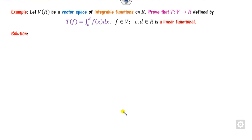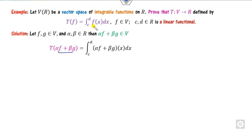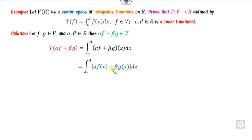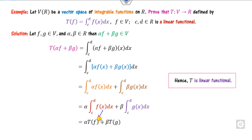Looking at another example: can this be a linear functional? Taking the vector space of functions, consider two functions F and G, with alpha and beta as scalars. Starting from the combined property, substituting the value of F, opening the bracket, and integrating by parts — taking alpha and beta as common — the result is alpha times T(F) plus beta times T(G). So this is a linear functional.